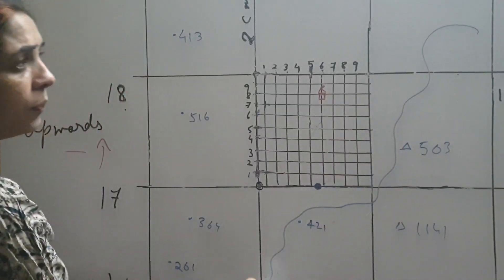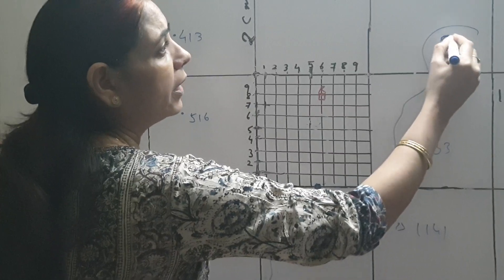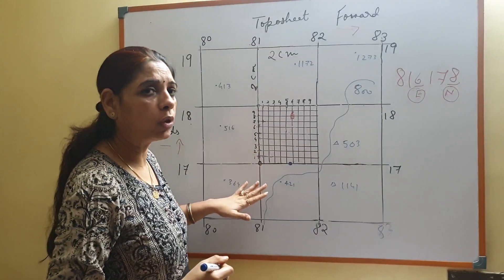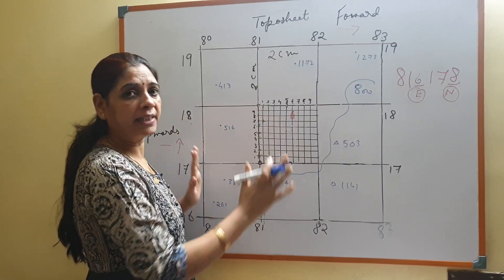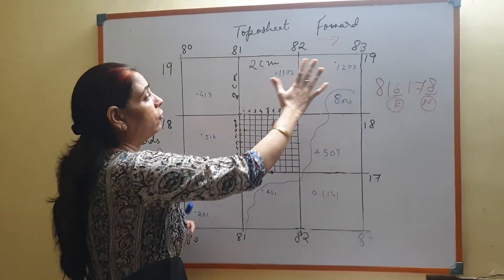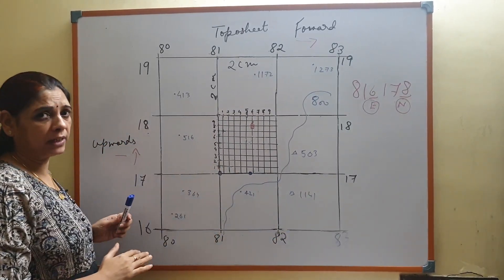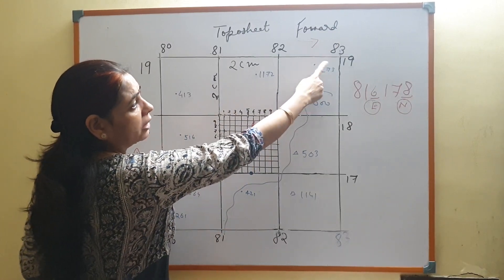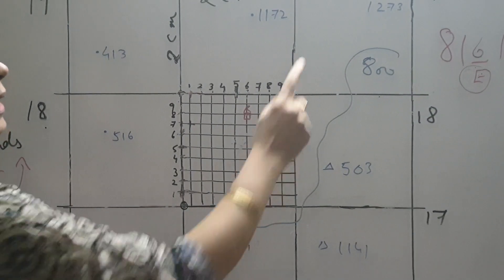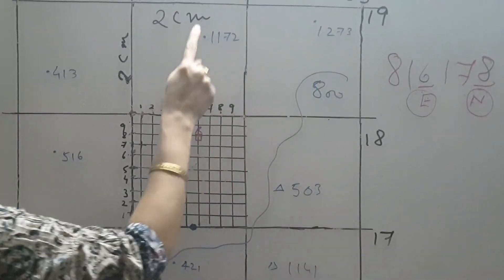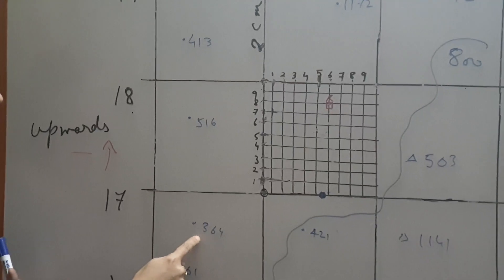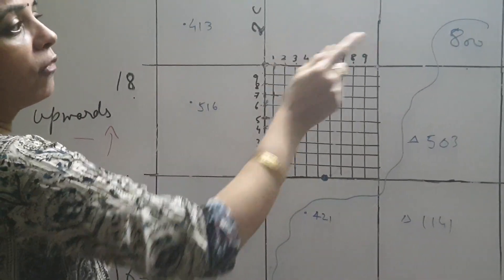There may be some contour lines also, and the value of the contours could also be given. When you see the heights — the spot heights and the contour heights — all over the topo sheet, you will have an idea of which part of the topo sheet has high height values and which part has low height values. Spot height means the height of that particular point or place — for example, 1273 meters or 1172 meters or 364 meters. So the spot height tells you the height of that place.